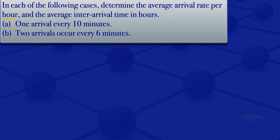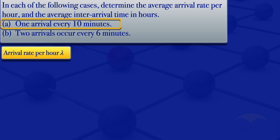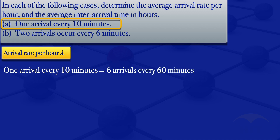Starting with the first one: 1 arrival every 10 minutes. What we want to find is the arrival rate lambda per hour. We multiply 10 minutes by 6 to get 60 minutes. For those 60 minutes, we have 6 arrivals, since each 10 minutes has 1 arrival. So 1 arrival every 10 minutes is equivalent to 6 arrivals every 60 minutes, which translates to 6 arrivals every hour.